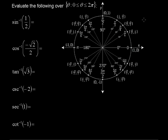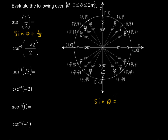Evaluate the following over all values theta, where theta is between 0 and 2π, including 0 and 2π. The first is the inverse sine of 1/2. The inverse of sine means we're looking for a value theta — an angle — such that sine of that angle equals 1/2. We can remind ourselves that sine of theta equals, on the unit circle, the y values.